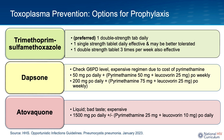For individuals intolerant of TMP-SMX, alternative regimens include a combined regimen of dapsone, pyrimethamine, and leucovorin. An important point: check a G6PD level prior to administering dapsone, because giving dapsone to someone with G6PD deficiency can cause hemolytic anemia. Additionally, this regimen of dapsone, pyrimethamine, and leucovorin is very expensive, primarily driven by the exorbitant cost of pyrimethamine in the United States.